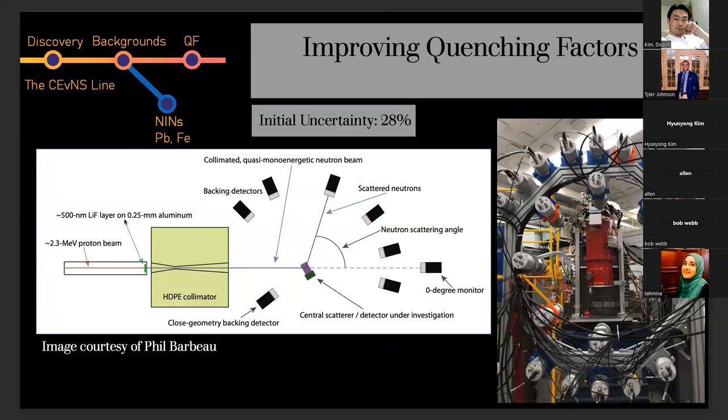Then the next step is improving the quenching factors. When I say quenching factor, it's really a stand-in for understanding how much energy you're depositing is going towards an observed channel. In the case of a cesium iodide detector, it's a scintillator. So what fraction of the energy you're depositing is going towards scintillation rather than an unobserved channel like phonons or ionization. To do this, we turn to my place of work, TUNL. We have a tandem Van de Graaff accelerator in the basement that produces a monoenergetic pulse of neutrons.